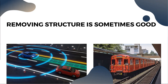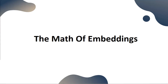Another example: text translation. You translate the text to an embedding, then decode that embedding into the other language. Doing away with the hard structure and working in higher-level math lets us jump from language to language. Let's talk about the math behind embeddings.